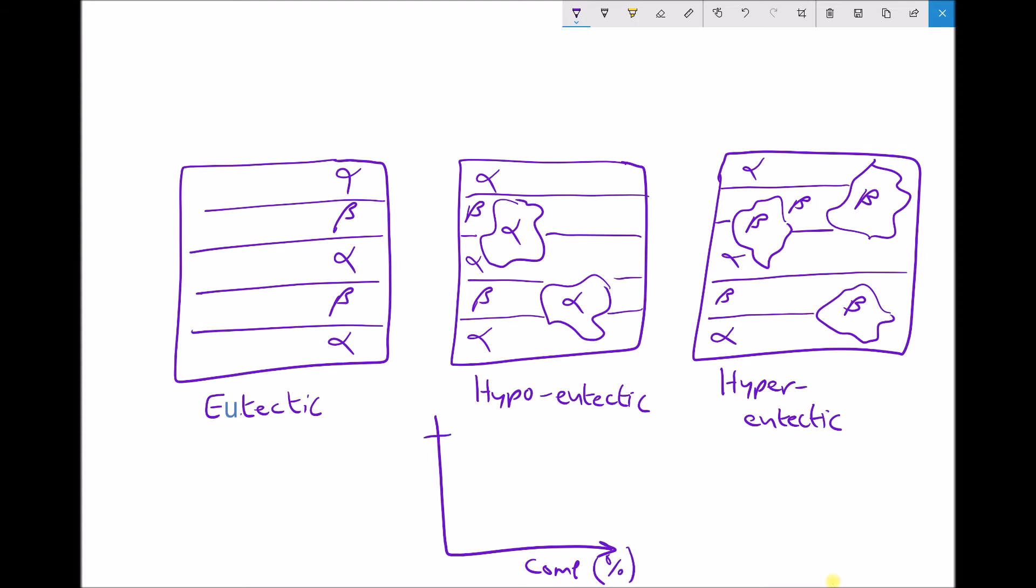is that the shear strength is actually maximum at the eutectic composition. So we see something like this, where the peak represents our eutectic composition. If we have hypoeutectic or hyper-eutectic compositions, then the strength is actually reduced.